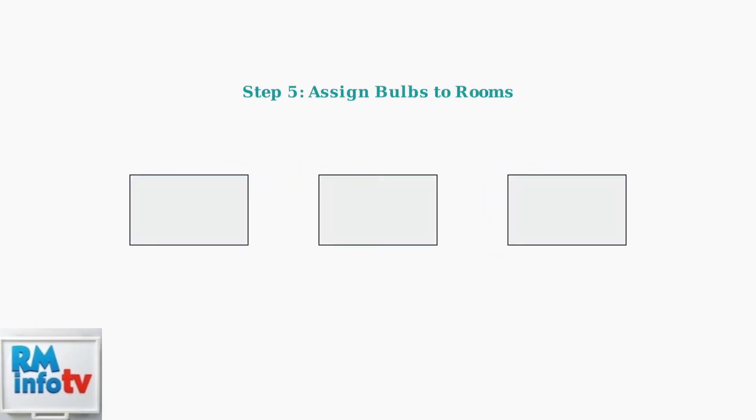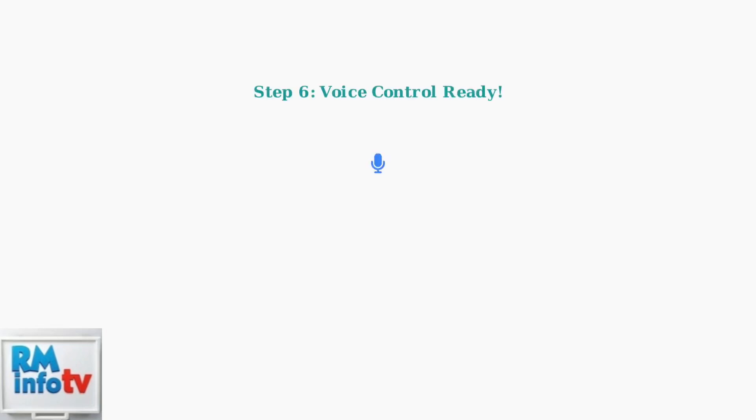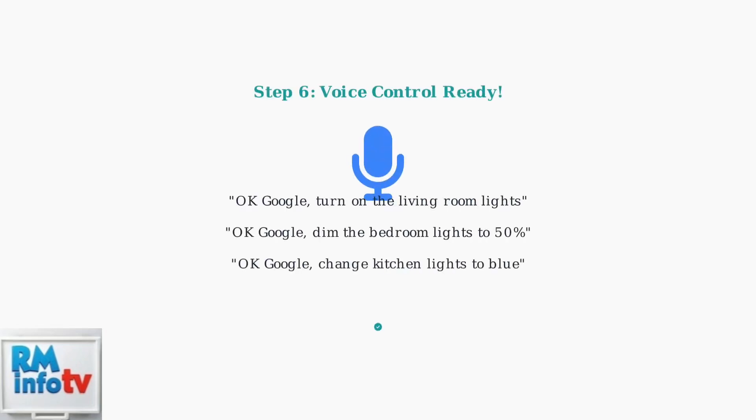Once linked, assign each Wizbulb to specific rooms in your home. This organization allows you to control lights by room using voice commands. Now you're ready to control your Wizbulbs with voice commands.